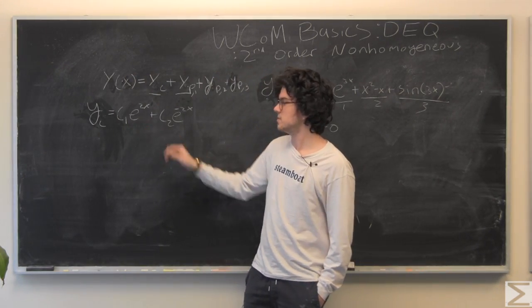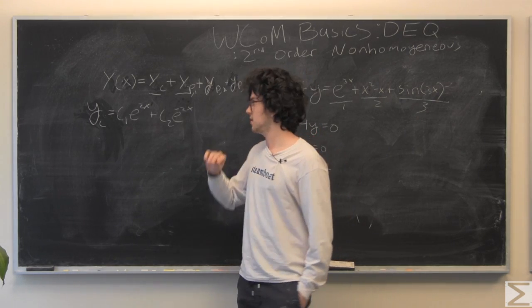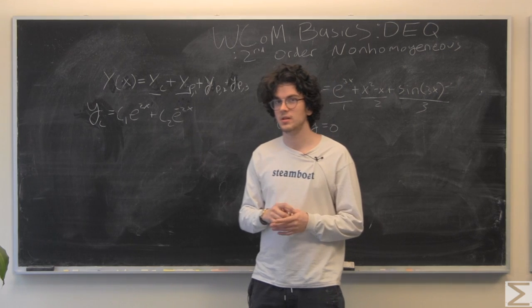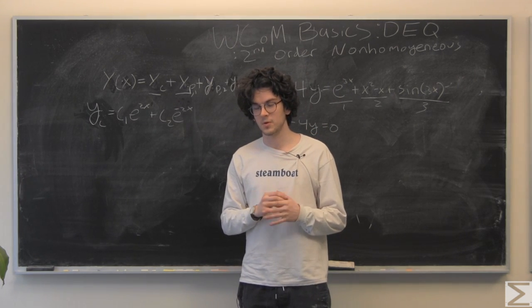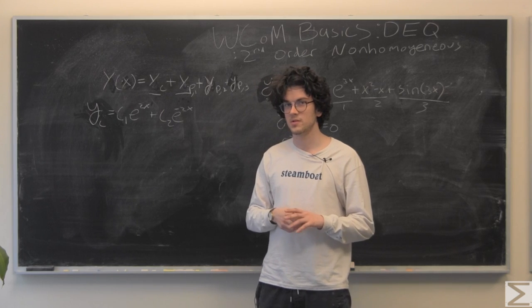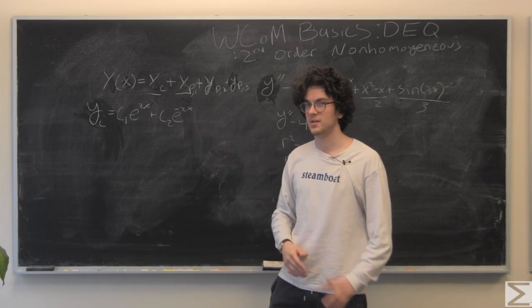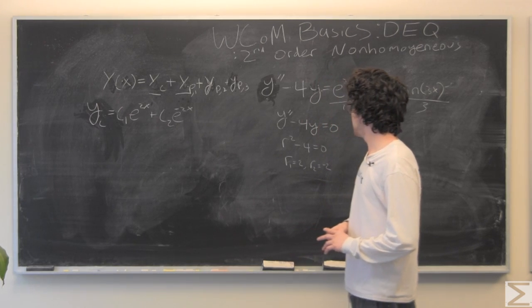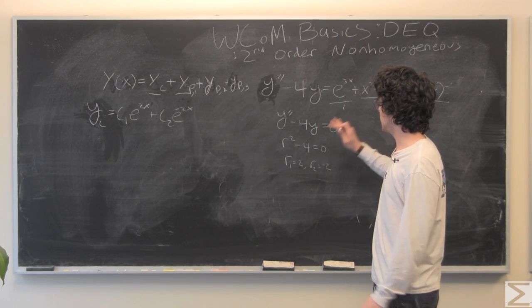Right off the bat, let's just solve our complementary solution. Just pull out your characteristic equation and solve for r1 and r2. This is our y sub c, and sorry, I've kind of flipped the variables on you. So, now instead of x as a function of t, which is what you might be used to in a kind of physical sense, we just have y as a function of x, but that doesn't change anything really.